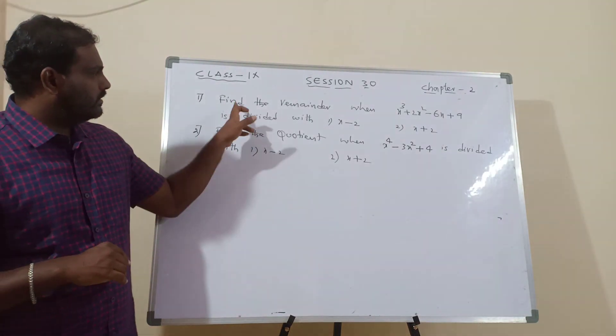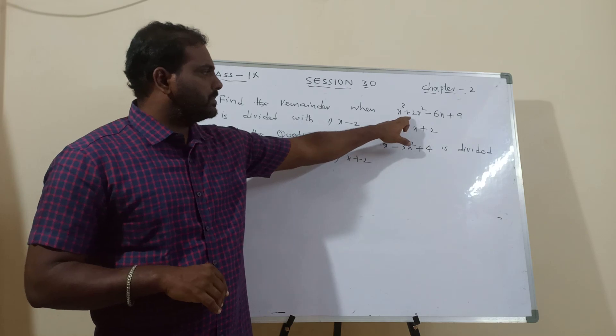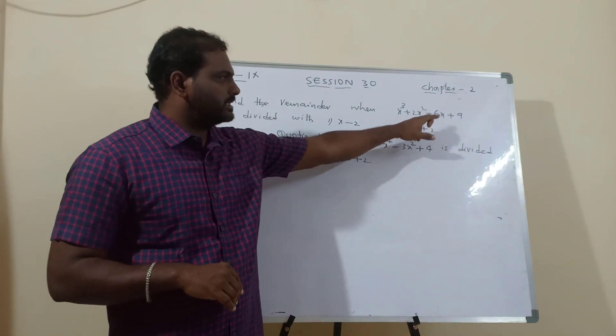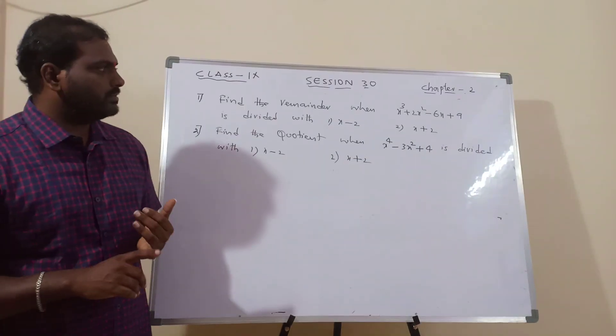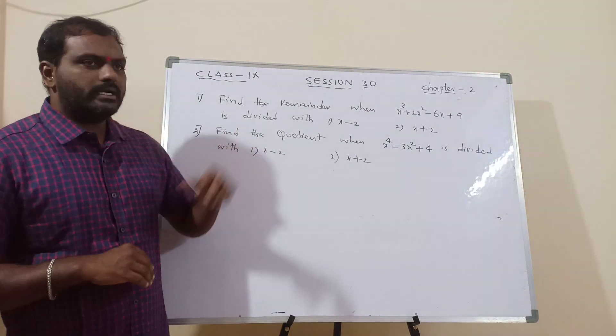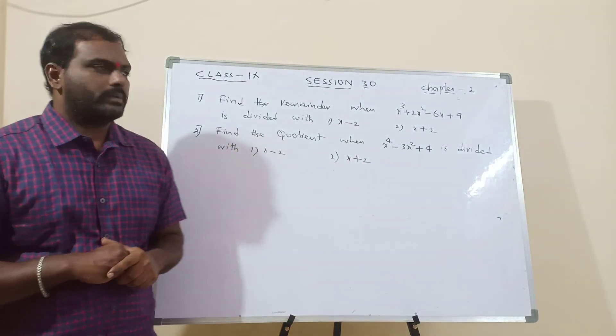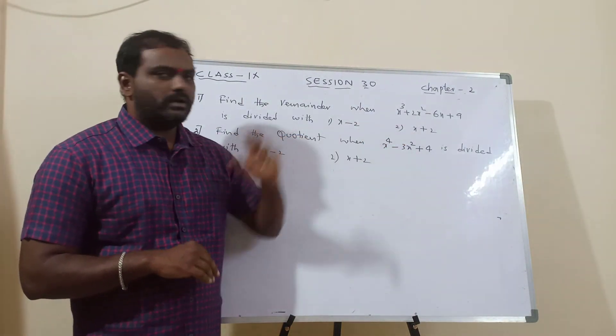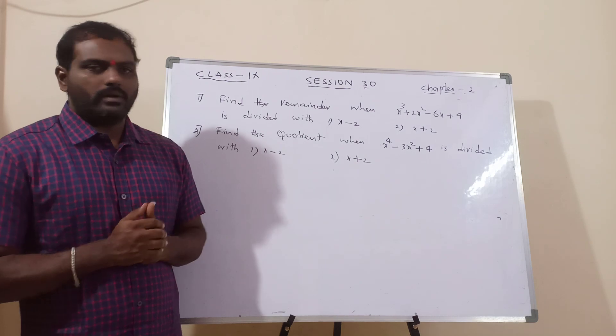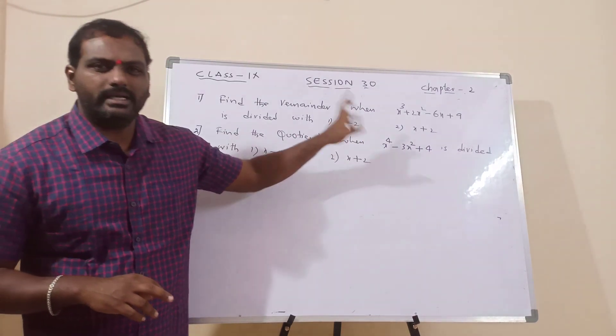The question is, find the reminder when x cube plus 2x square minus 6x plus 9, x cube plus 2x square minus 6x plus 9, is divided with x minus 2 and x plus 2. That means, we have to take this as p of x, that is divided with x minus 2.